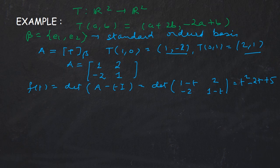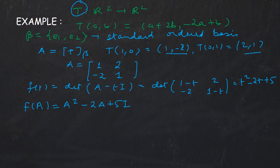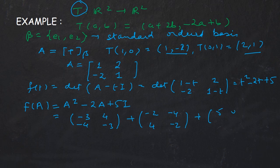Now let's verify f(A) = A² − 2A + 5I. Computing: A² = [−3, 4; −4, −3], then −2A = [−2, −4; 4, −2], and 5I = [5, 0; 0, 5]. Adding these three matrices gives the zero matrix of order 2, confirming the Cayley-Hamilton theorem.